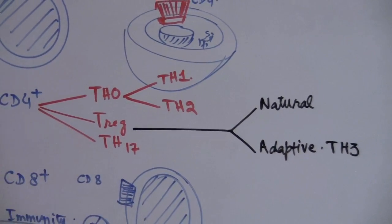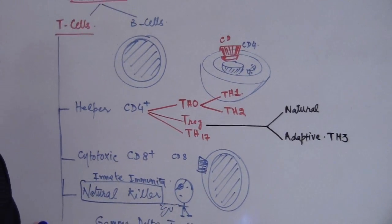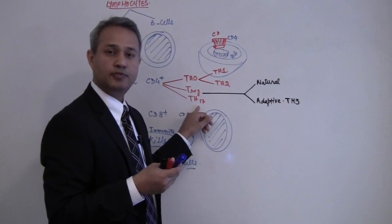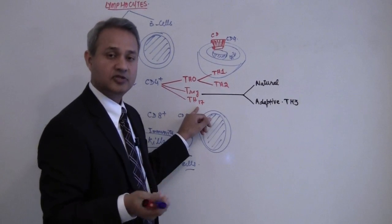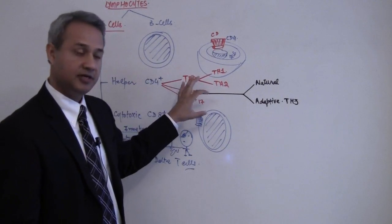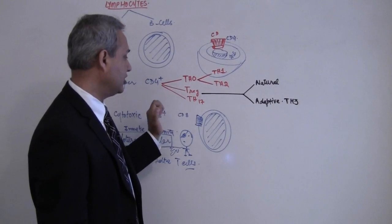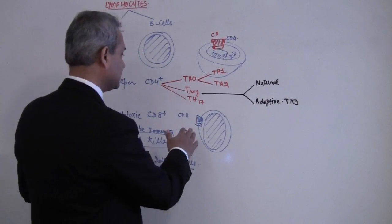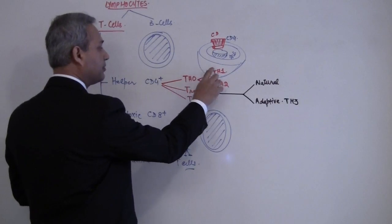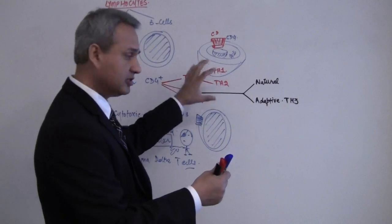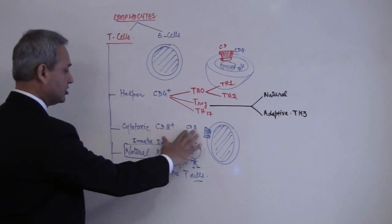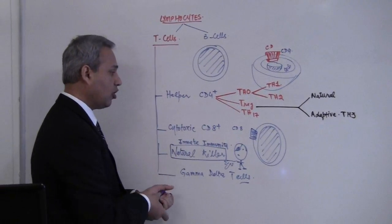There is another type called T helper 17. T helper 17 cells are pro-inflammatory cells and are now being identified as causing many autoimmune diseases. Research is still ongoing. In the helper category we have T helper 0, 1, 2, T regulatory cells which are anti-inflammatory, and T helper 17. Cytotoxic CD8-positive T cells can also be called cytotoxic T cells.